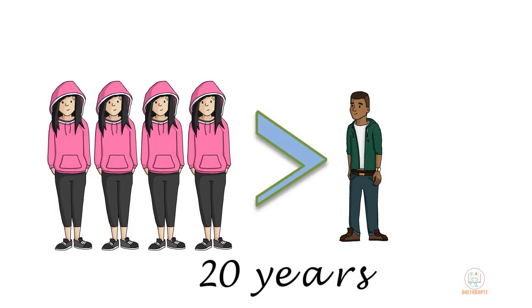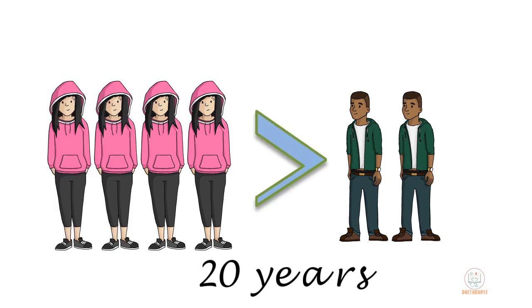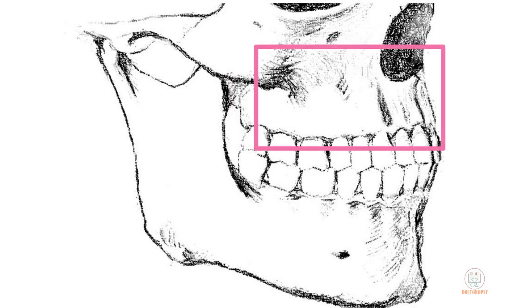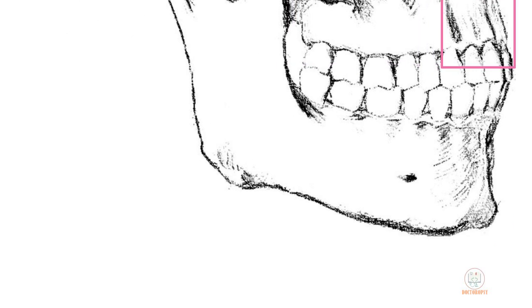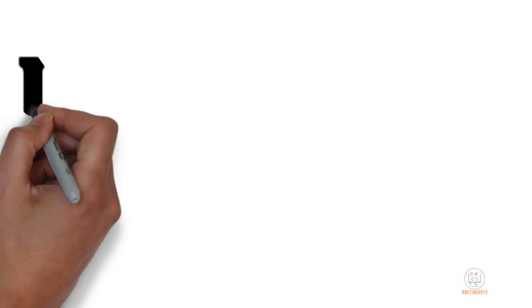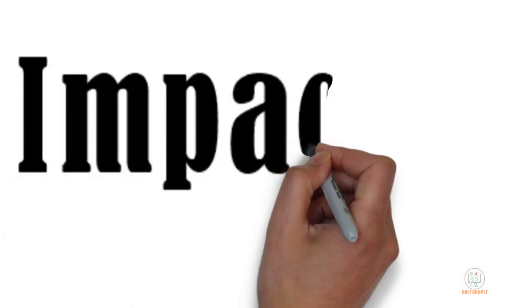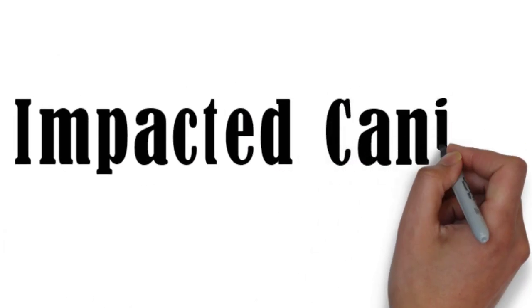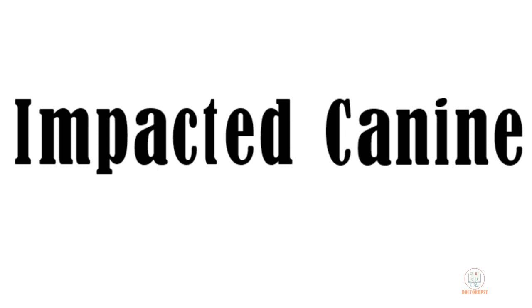Clinically, AOTs are generally diagnosed in younger individuals around 20 years of age and are more common in females than in males. They occur more commonly in the maxilla than mandible, and in the maxilla they are more common in the anterior part. The majority of tumors are associated with impacted teeth, out of which mostly are canines.